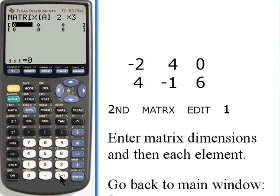So the first row is negative 2. I want to press enter after each of the elements, 4 and 0. And the second row is 4, negative 1, and 6.